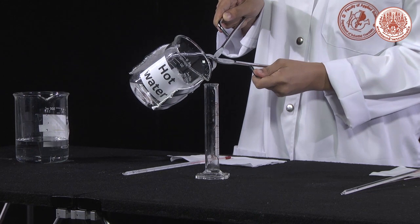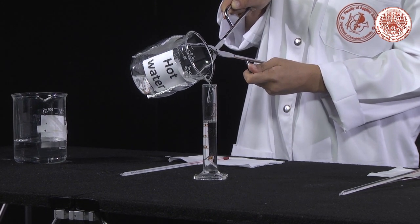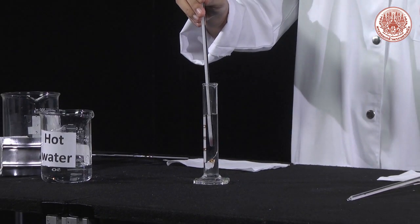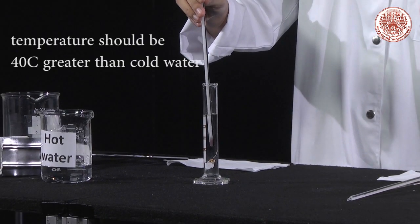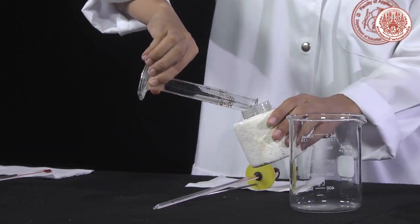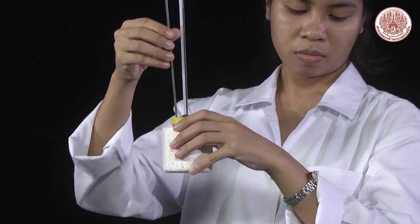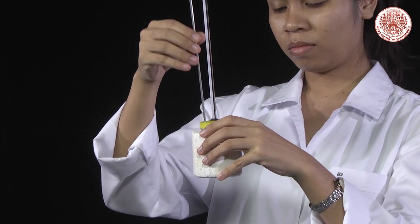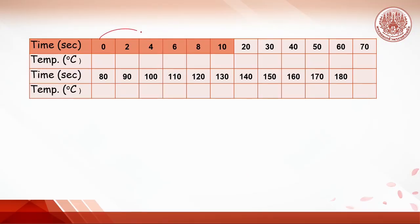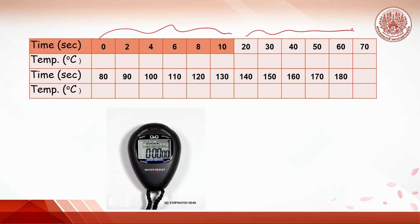Get 25 ml of hot water using a graduated cylinder. Record the temperature of the hot water, which should be 40 degrees Celsius greater than the temperature of the cold water. Immediately pour the hot water carefully into the cold water in the calorimeter. Stir gently and record the temperature every 2 seconds for the first 10 seconds, then every 10 seconds for 3 minutes, or until a steady temperature is obtained. The timer should be ready at the time of mixing, since the temperature will change very fast at the beginning.